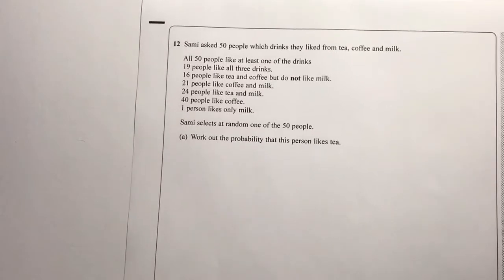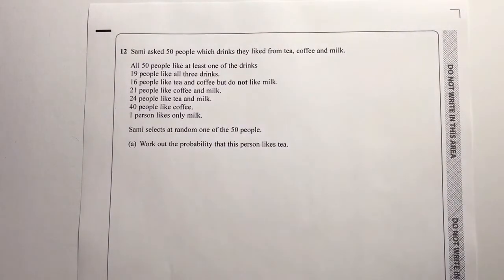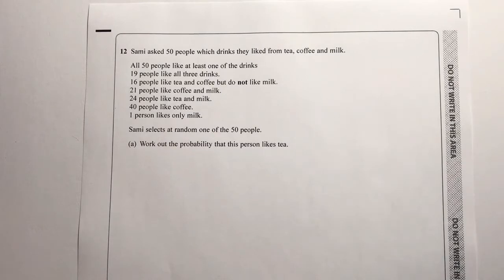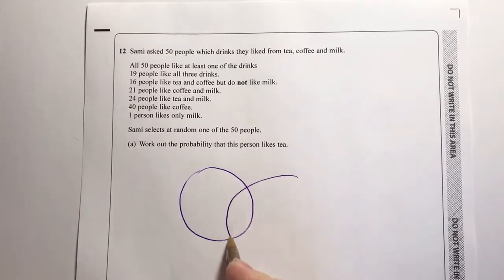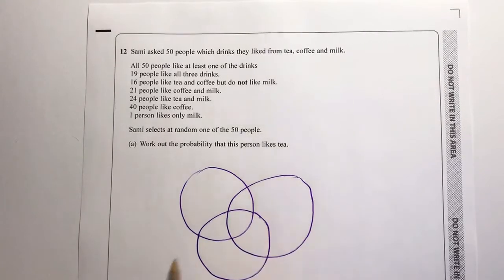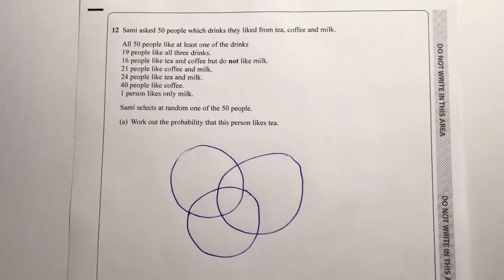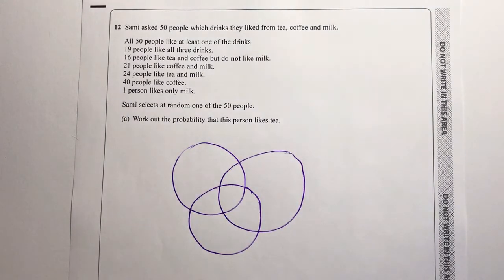Question 12 deals with something that on the surface looks extremely complicated, and it is a little bit. There is stuff you need to do to work through it carefully. Basically, we've got to work out the probability that one out of a group of 50 people likes tea. I'm going to create a Venn diagram split into circles, which will give us the ability to put numbers in to suit the information we've been given. We've got 50 people represented by these three circles.